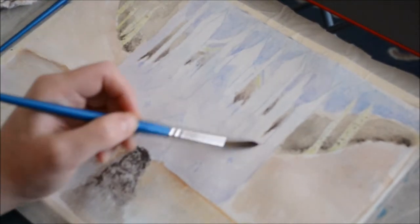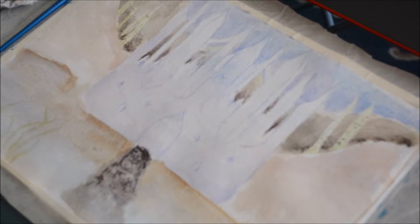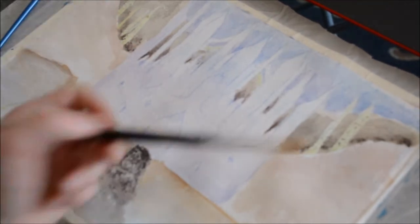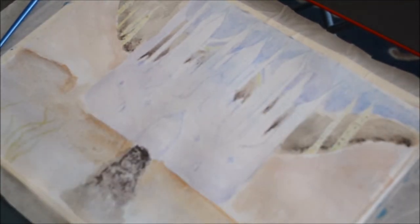Once again using a wet on wet technique I blocked in the colors. I worked on the castle in several layers to ensure that I didn't make it too dark on the first pass. It also allowed me to provide depth and texture.